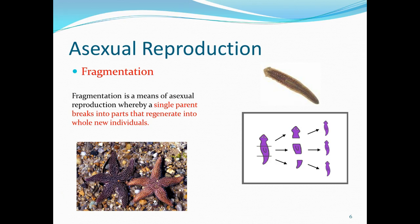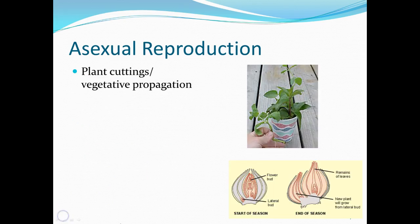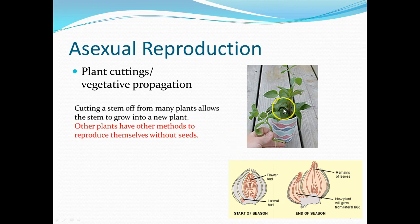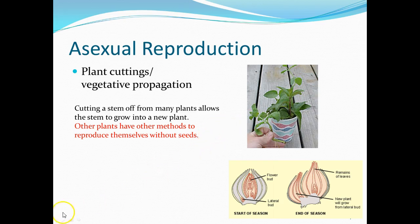This is considered asexual reproduction because one organism recreated copies of itself all by itself. The last type of asexual reproduction we're going to talk about is called vegetative propagation — a lot of you know this as plant cuttings. You take a plant, cut part of the stem off, stick it in water, and eventually it'll start growing roots.